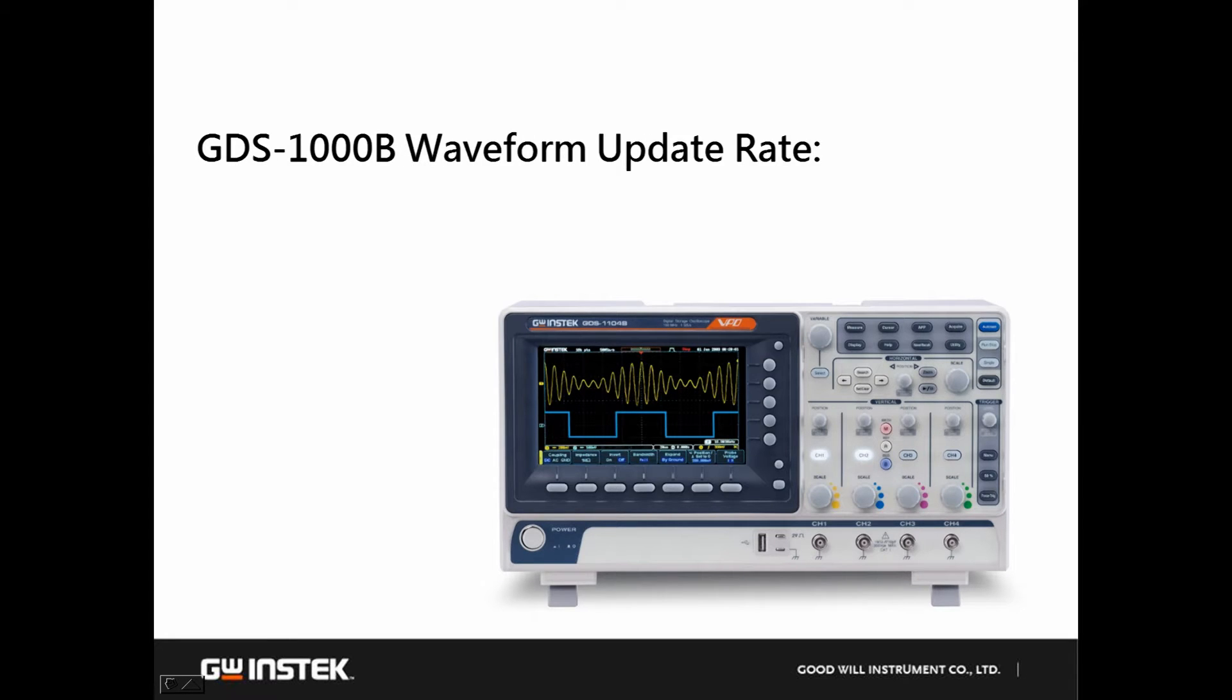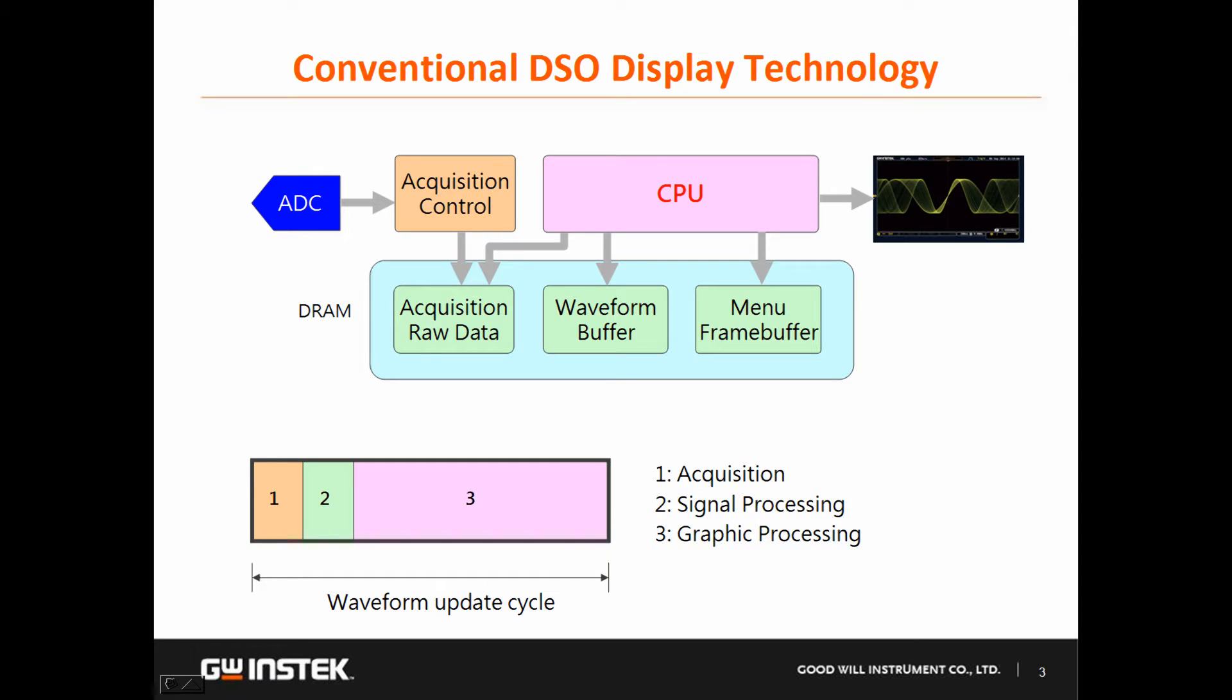GW Instek's entry-level DSO GDS-1000B is equipped with high waveform update rate up to 50,000 waveforms per second. We will show you why GDS-1000B is able to reach higher waveform update rate.